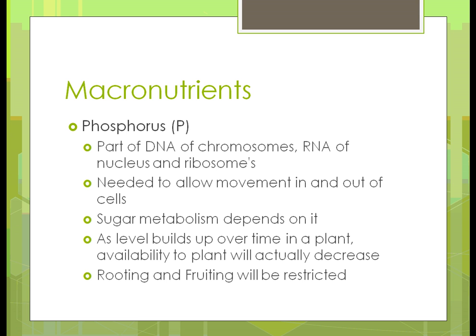Phosphorus is part of DNA chromosomes and the RNA of the nucleus and ribosomes. Basically, it's needed to allow movement into and out of cells. The metabolism — the conversion of CO2 into sugar — won't happen if you don't have phosphorus. But we're also finding that as levels build up in the soil, availability actually decreases. In most fertilizers, the phosphorus is being removed because we're getting too much in the soil, and if there's too much it actually won't be used. We really need it to promote good sugar metabolism, so we need to find ways to unbind the phosphorus already in the soil — something we'll discuss in future chapters.